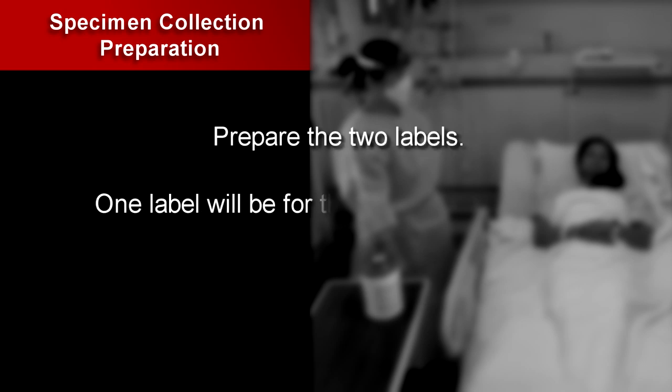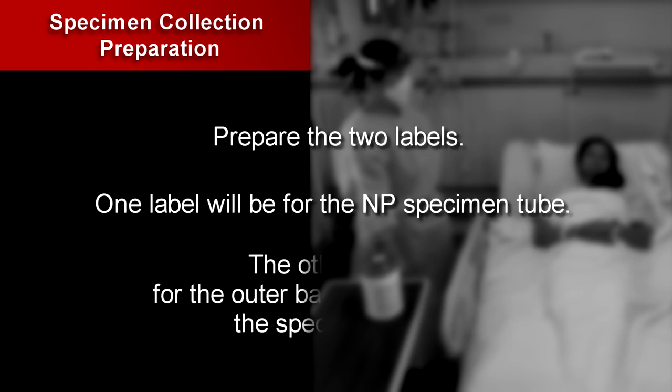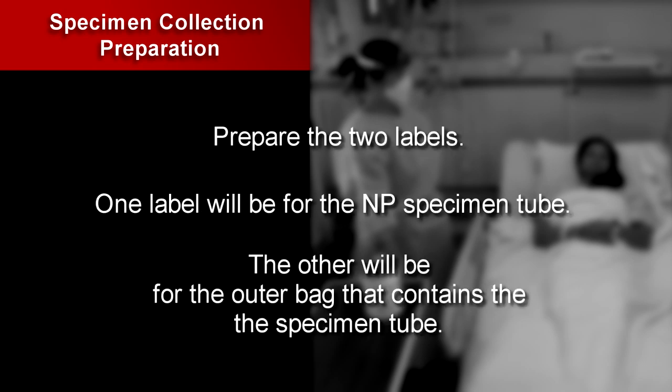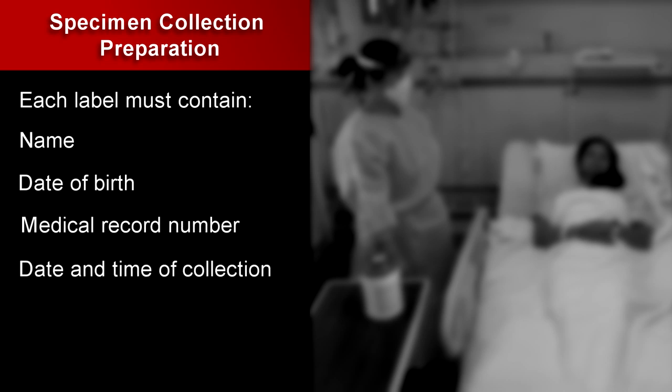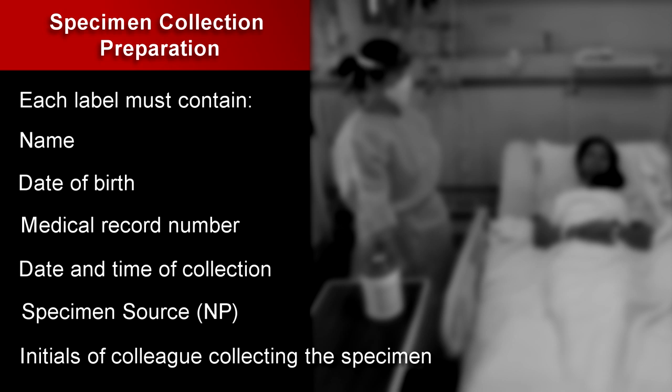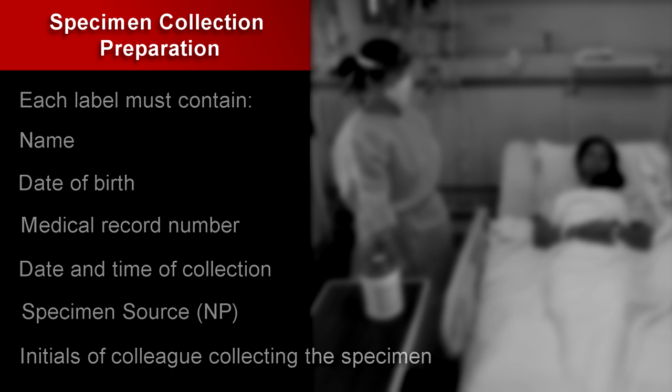Prepare the two labels. One label will be for the NP specimen tube and the other will be for the outer bag that contains the specimen tube. Each label must contain name, date of birth, medical record number, date and time of collection, the specimen source, and the initials of the colleague collecting the specimen.